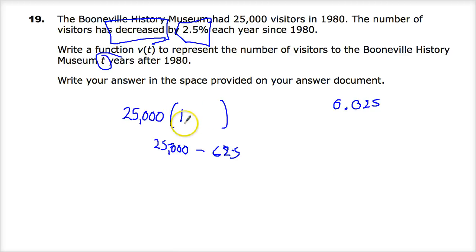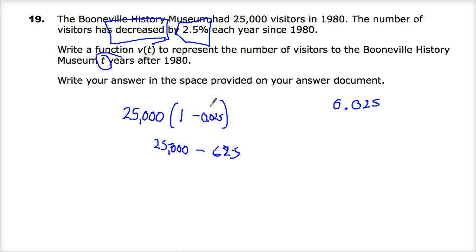So when you set this up, make sure you have 1 minus 0.025. Now if it were increasing — like if the Booneville History Museum starts getting 6 to 7% increases per year — then you would just add. That's the only difference: if it's an increase it's plus, and if it's a decrease it's minus.